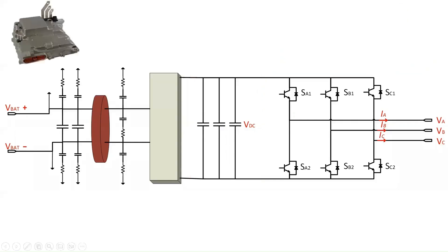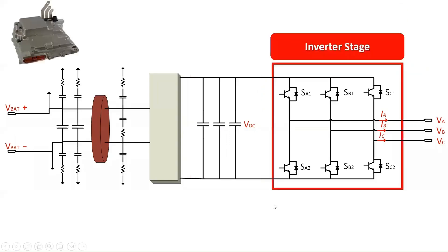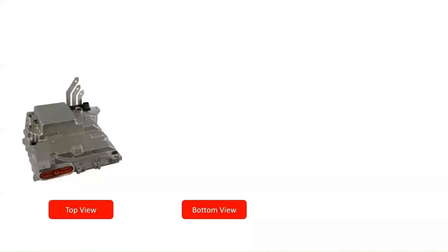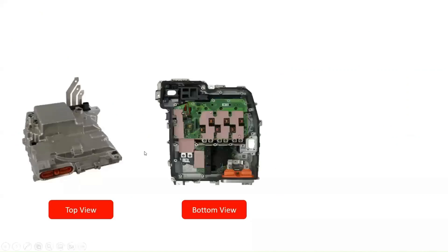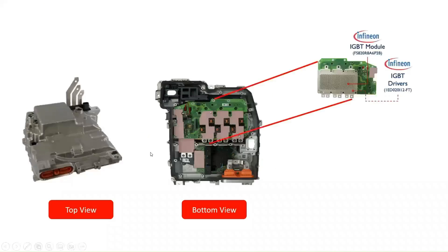The last stage is the inverter stage, which initiates conversion via high frequency switching and delivers the inverted power to the load electric motor. The inverter stage consists of Infineon's insulated gate bipolar transistors, IGBT, with manufacturer number FSA20R08A6P2B, which is a 6-pack module optimized for 150-kilowatt inverters.